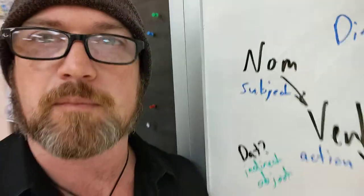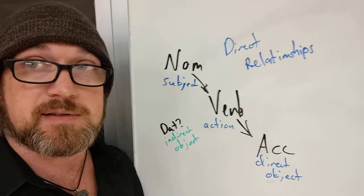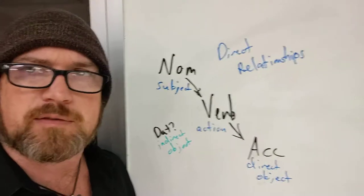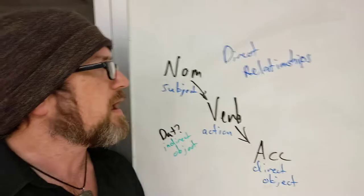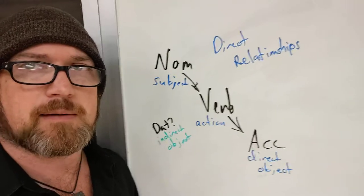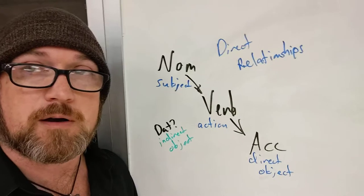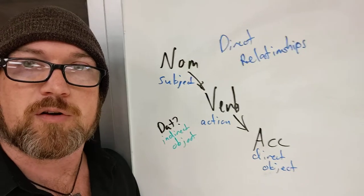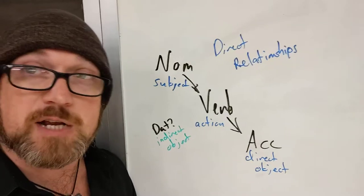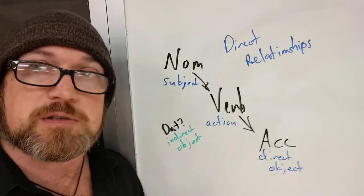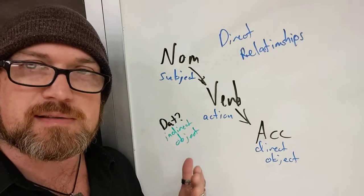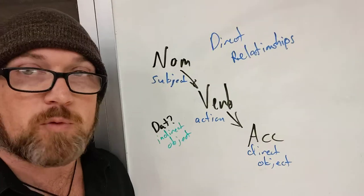Talking about the direct relationships within a sentence might actually be a good place to start, because there's a reason why we learned those first. It is November at the time of this posting, and we've been reading Latin for almost two and a half months, and we have not formally talked about this case yet. That's because the direct relationships are much easier to understand. The direct relationships in your sentence are your nominative, your verb, your accusative. You've got a nominative subject that governs the verb — that's why verbs have personal endings that agree with the subject — because the nominative governs the verb. It is the subject that does the thing, whatever is being done.